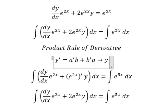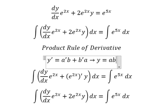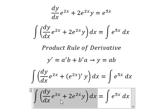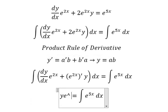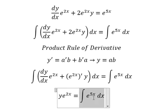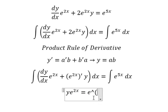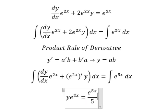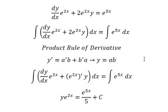So the integration gives us y equals a times b. So the integration gives us y times e to the power of 2s equals e to the power of 5s over 5, and we add the constant c.